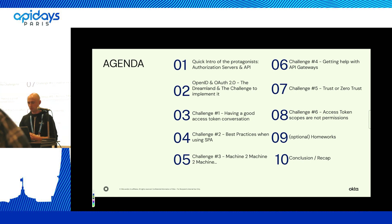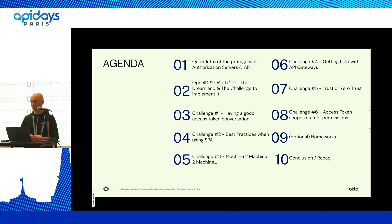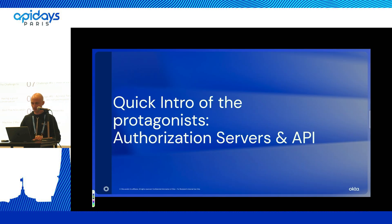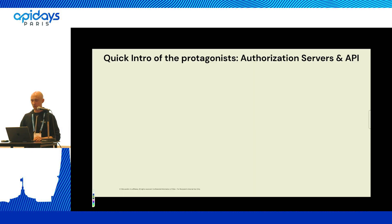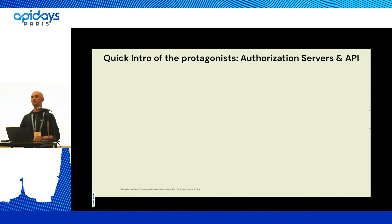At the end, I will leave you with some homework if you liked what you saw — some labs. Of course, we're not going to do them right now, but you'll be free to do them after and discuss them at the booth. The protagonists of today are authorization servers and APIs. They exist because we need security when we build APIs, and we want to develop securely in the API economy.